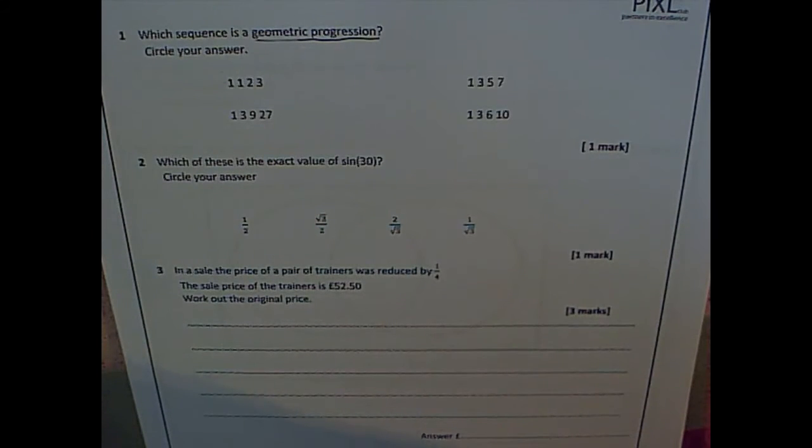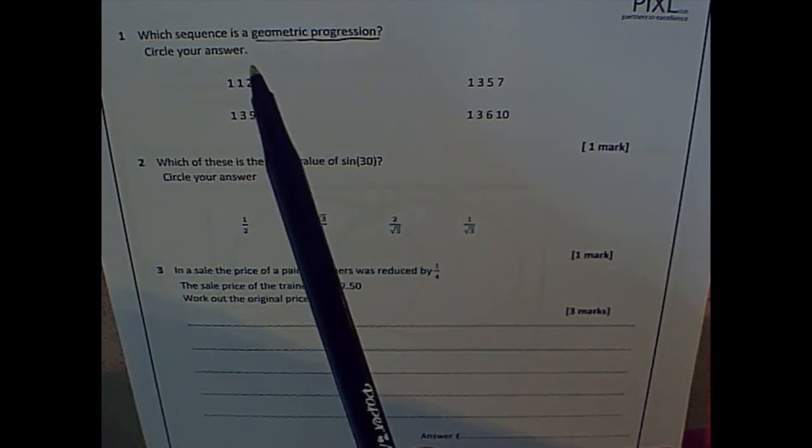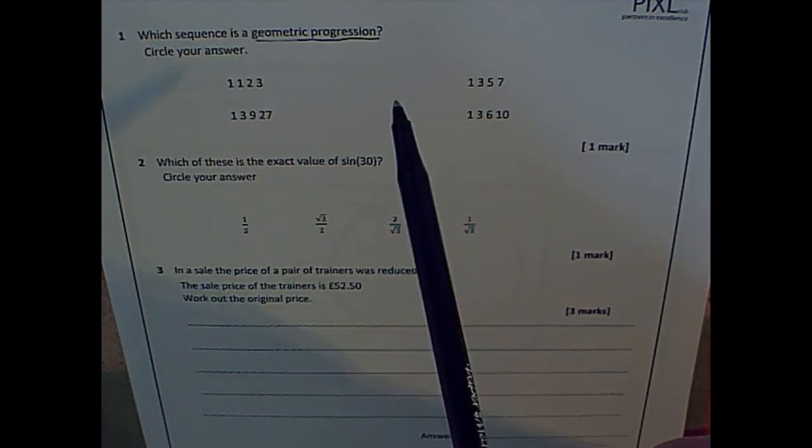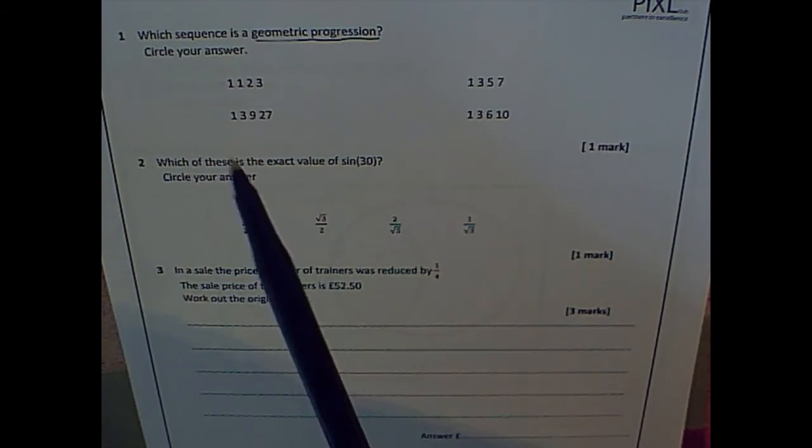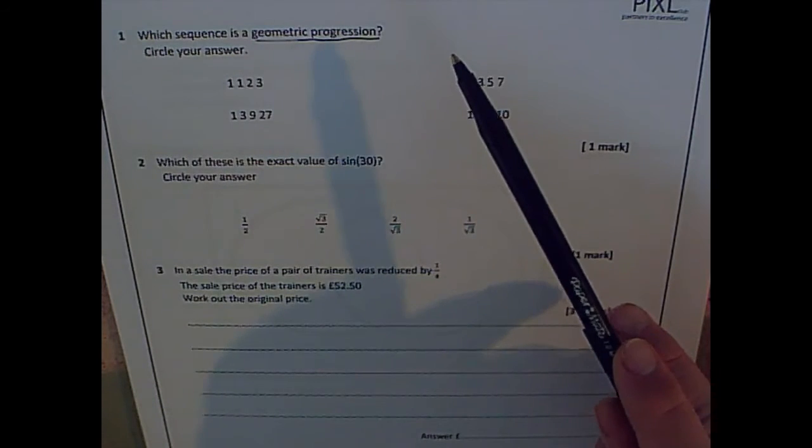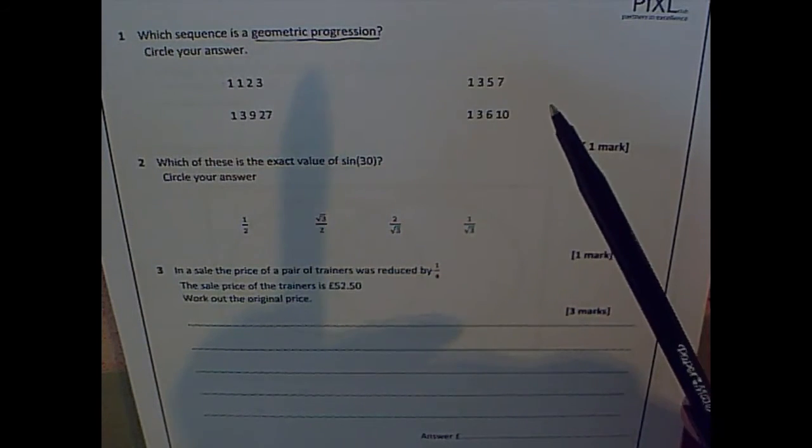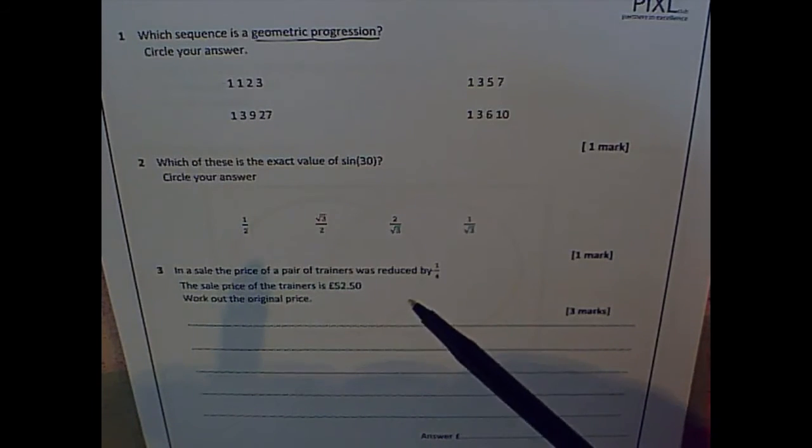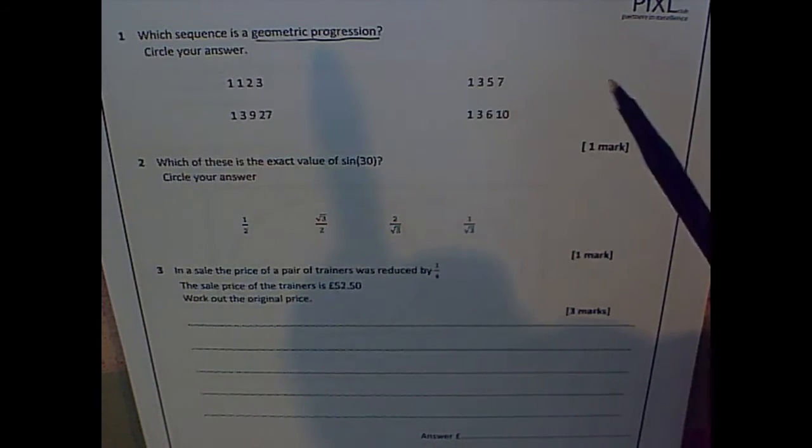A geometric progression is a sequence where the previous number is multiplied by something. So for example, one, two, four, eight, sixteen, thirty-two would be a geometric progression where each time it was doubled.